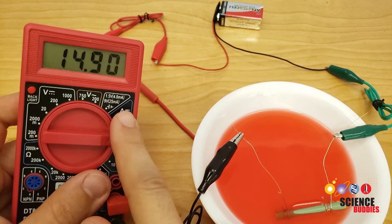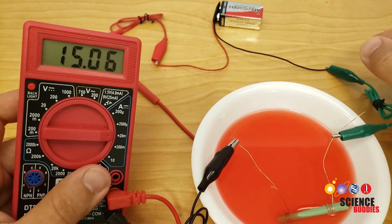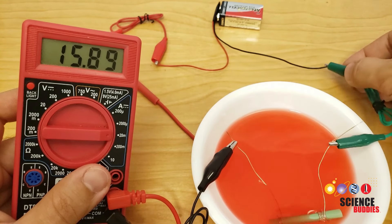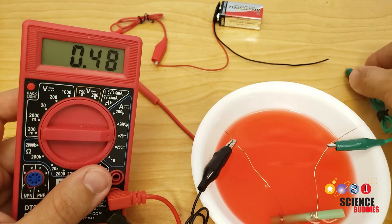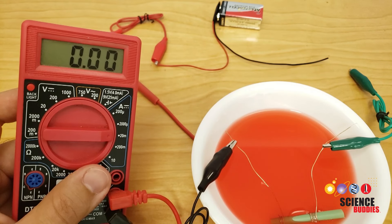If your multimeter is reading zero all the time, there are two possibilities. One is that you have an open circuit and something is disconnected. For example, if I disconnect this alligator clip, the circuit is broken, no current can flow, and you see that my multimeter will read zero.